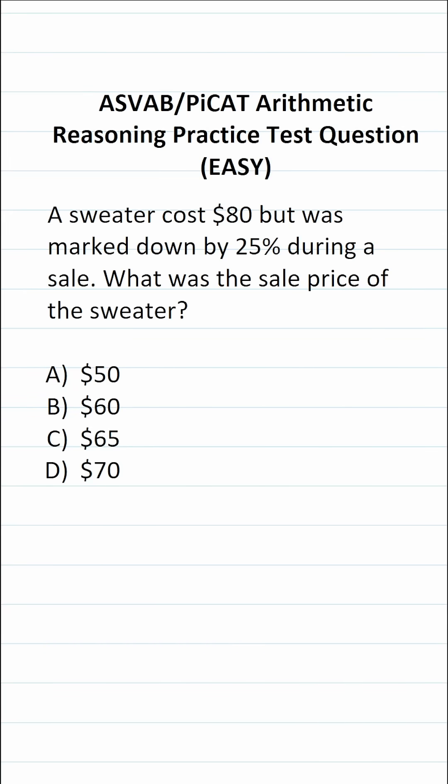This arithmetic reasoning practice test question for the ASVAB and PiCAT says, a sweater cost $80 but was marked down by 25% during a sale. What was the sale price of the sweater?